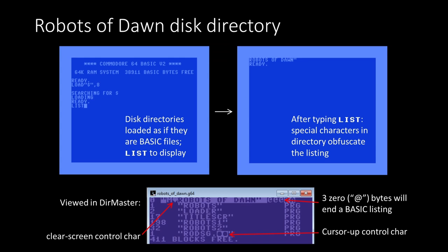The Robots of Dawn disk directory is a little weird. On a Commodore 64, loading the directory with 'LOAD$,8' loads the disk directory as a BASIC file and you type LIST to display it. But in Robots of Dawn's case, all you get is 'Robots of Dawn' when you list it, because they've obfuscated the directory. With modern tools like Directory Master, you can see they embedded a clear-screen control character and three zeros in a row, which causes a BASIC listing to terminate.